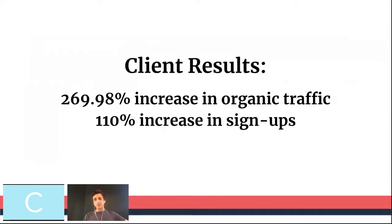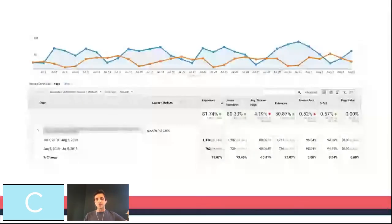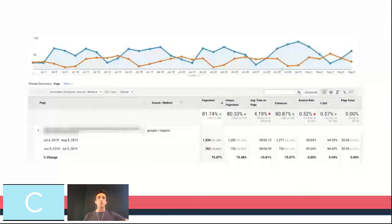The high-level results from this particular client: we managed to increase their organic traffic by around 270% in 90 days across the board. But most importantly, we managed to increase their user signups by around 110% — everyone was thrilled by that. And here's another client that was bouncing around the bottom of page one for a very broad term that we weren't expecting to rank for. We saw that opportunity, and after trying a few things to bump up to the top three, we optimized the content itself to make it more relevant for that broad term — a 75% increase overall on organic traffic.